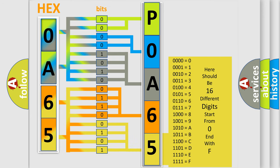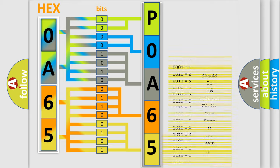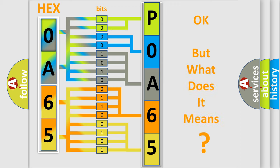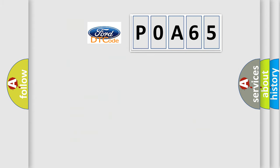We now know in what way the diagnostic tool translates the received information into a more comprehensible format. The number itself does not make sense to us if we cannot assign information about what it actually expresses. So, what does the Diagnostic Trouble Code POA65 interpret specifically for Infiniti car manufacturers?